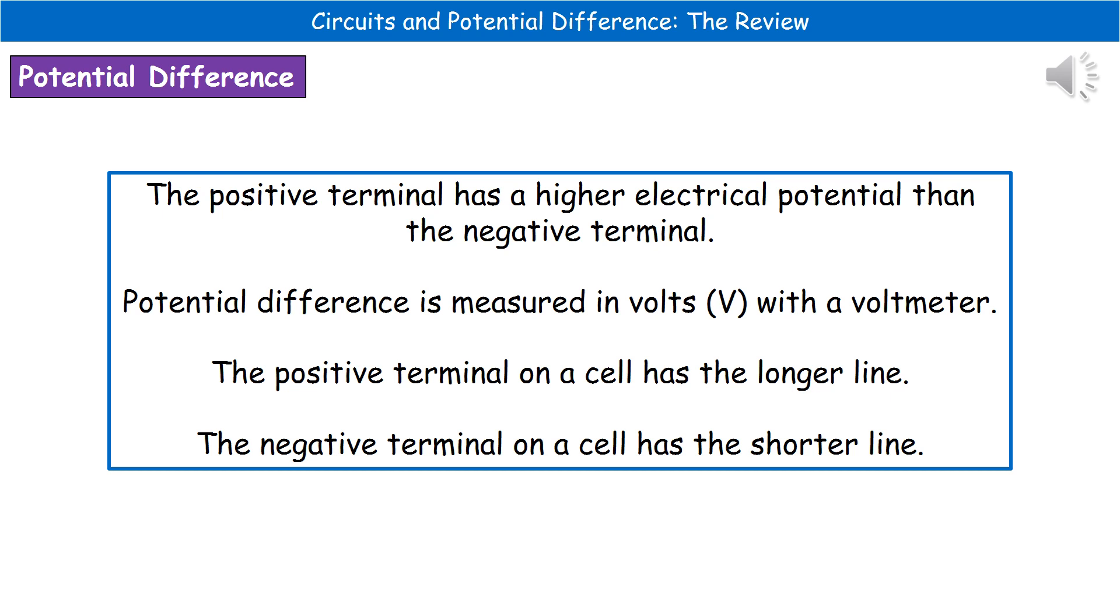When we're actually measuring the potential difference, we're going to use that bit of equipment called a voltmeter, and we will get a reading that has the units of volts, which is a capital V. What we actually do need to remember is when we come to draw our circuit diagrams to make sure that we have very clear positive and negative terminals.